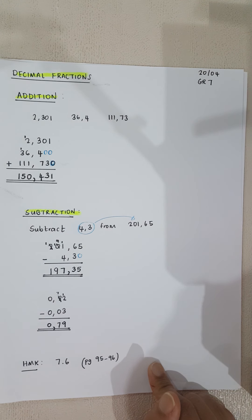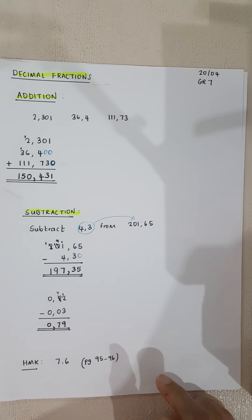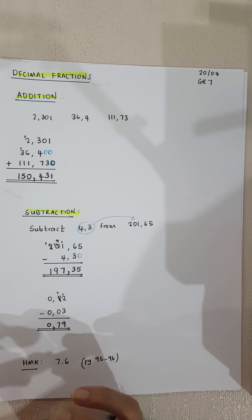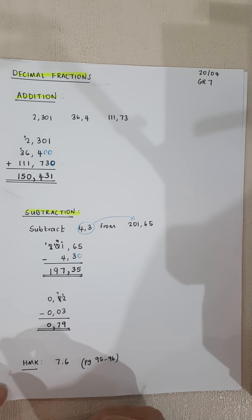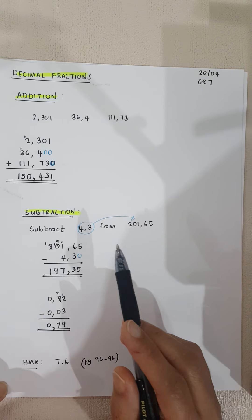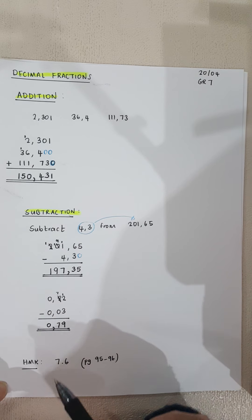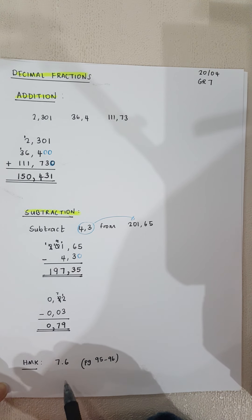Then I've got 0.82 minus 0.03, and my answer is 0.79. Now this is only to check your answers. You're not allowed to do that when you're doing the exercise. You have to show that you've done the column method and not cheat yourself, because in the test you won't be allowed to use a calculator. So for today we did addition of decimal fractions and subtraction of decimal fractions. Your homework is 7.6 on page 95-96.